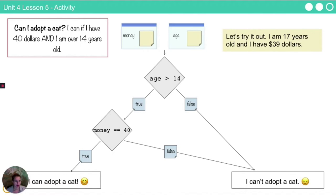So let's try it out. Let's say I am 17 years old today. I have $39. So let's walk through this process. $39. Both of these go in my posted notes for money and age in the variables.